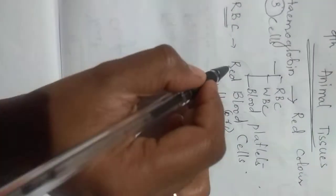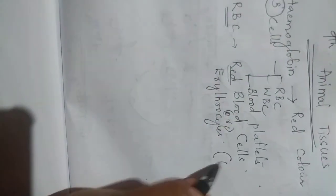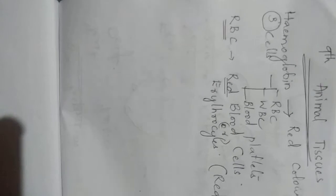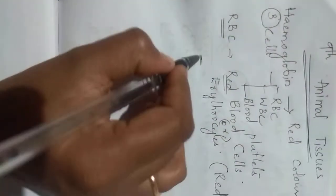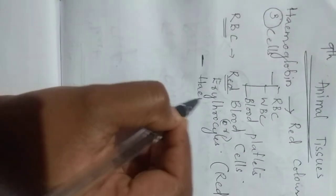And these red blood cells are red in color. They are red in color because they have a protein called hemoglobin. Hemoglobin is a protein.